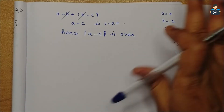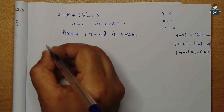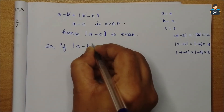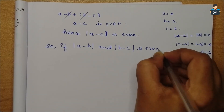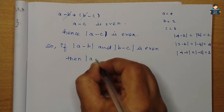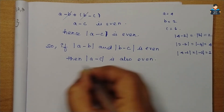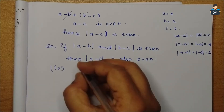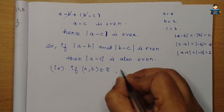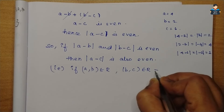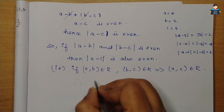Both differences are even numbers, so the example confirms the proof. What we need to write: if modulus of A minus B and modulus of B minus C are both even, then modulus of A minus C is also even. This condition proves that if (A, B) belongs to R and (B, C) belongs to R, then (A, C) also belongs to R.